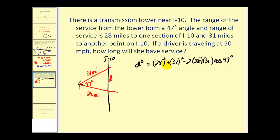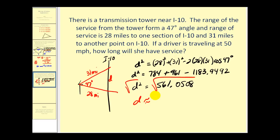Let's go ahead and start simplifying the right side. So D squared is equal to 561.0508. Now we'll take the square root of both sides to find the value of D. Remember, D would have to be positive. So D is going to be approximately equal to 24 miles. So the distance here is approximately 24 miles, so there's a 24-mile distance where the driver will have service.